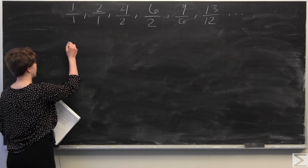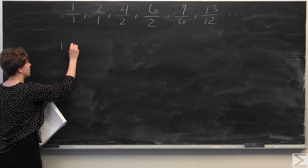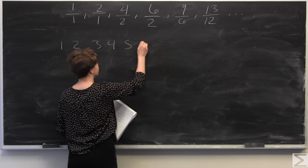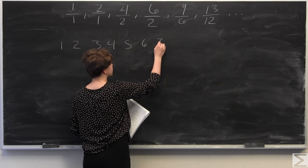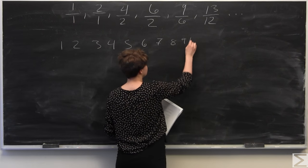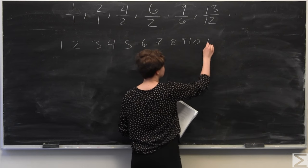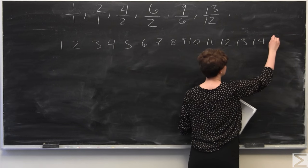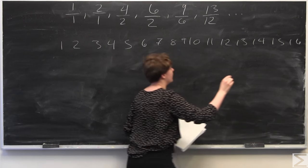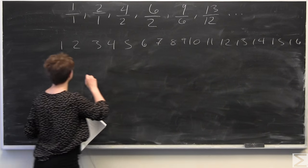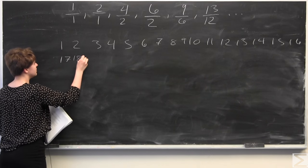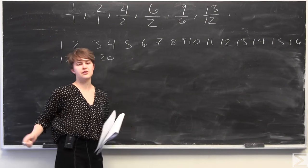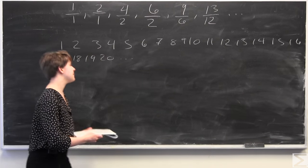To investigate, I'm going to write out all the integers: 1, 2, 3, 4, 5, 6, 7, 8, 9, 10, 11, 12, 13, 14, 15, 16, 17, 18, 19, 20, and so on and so forth. So we just have a list of all the integers there.